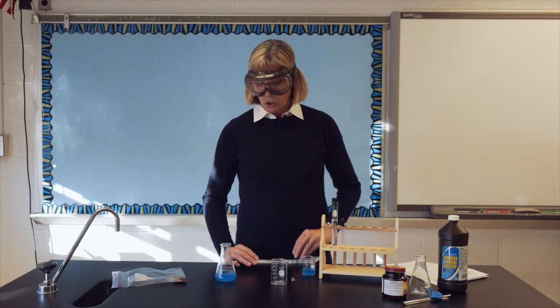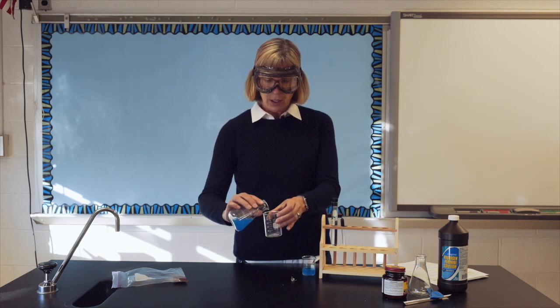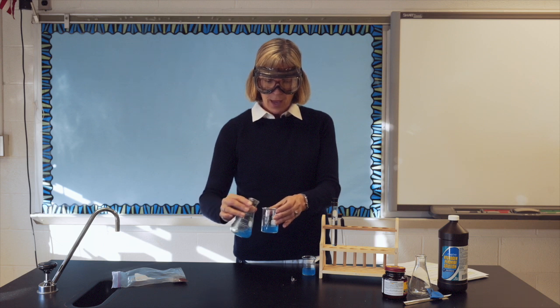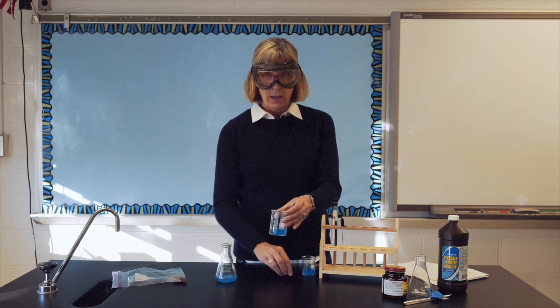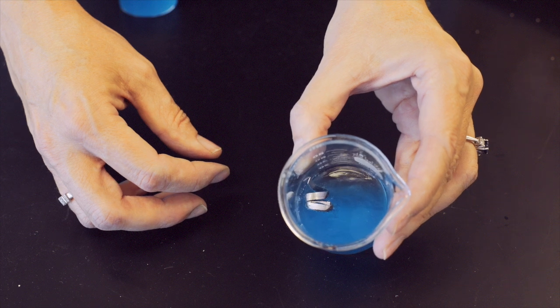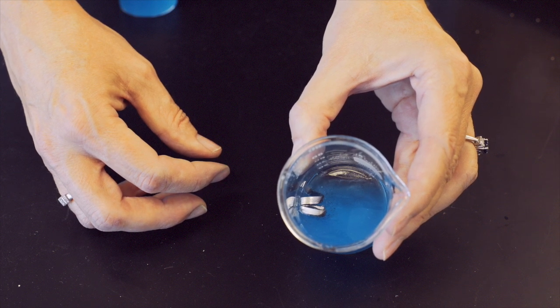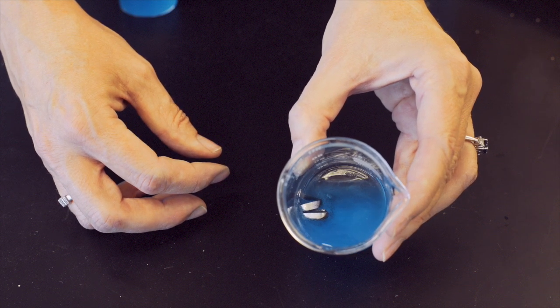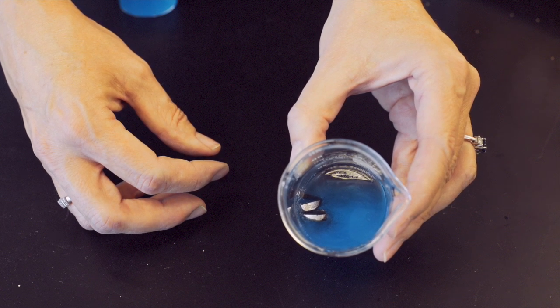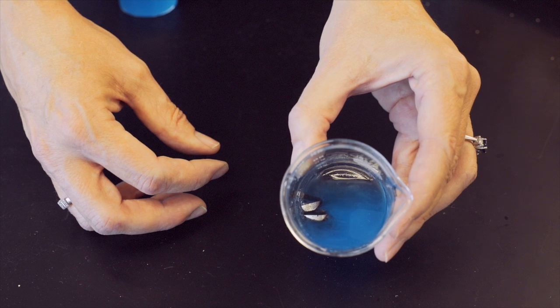Activity B instructs you to put 20 mLs of copper sulfate into a small beaker and then add a piece of magnesium metal. Notice the small bubbles. As the reaction progresses, notice also the color change of both the liquid and the metal.